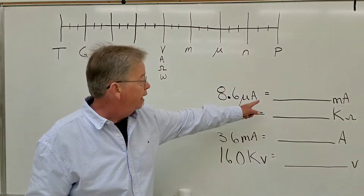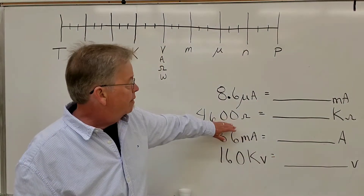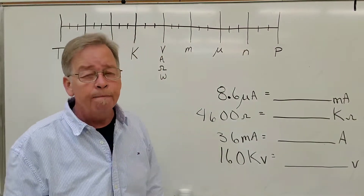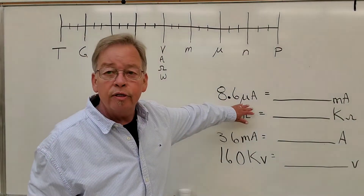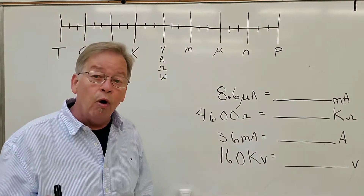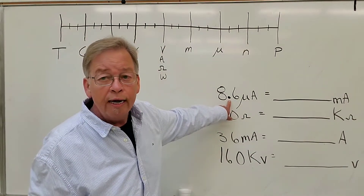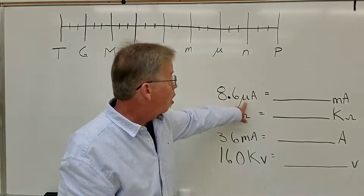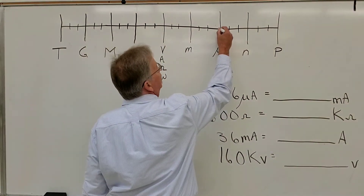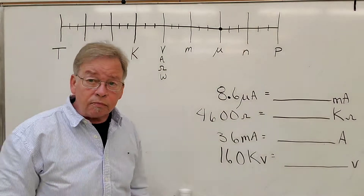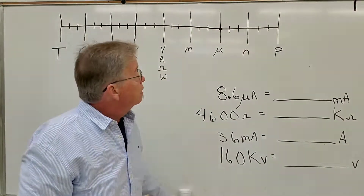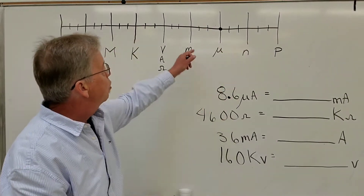8.6 microamps equals how many milliamps? And how many ohms are in kilo-ohms? This is what we're doing. It really just boils down to moving the decimal point. So I see a decimal point in this value, and what I have to realize is that decimal point is actually sitting on the number line on the micro spot. So that means that this decimal point is sitting right here on my number line. Now I need to convert it over to milliamps, so I'm going to have to move the decimal point to the milliamp position.